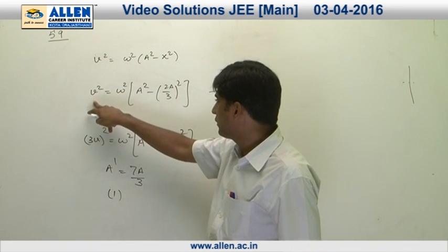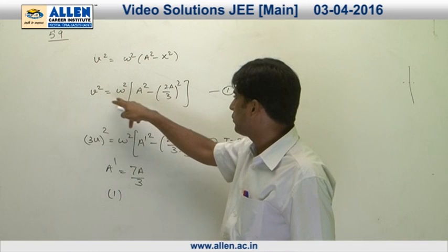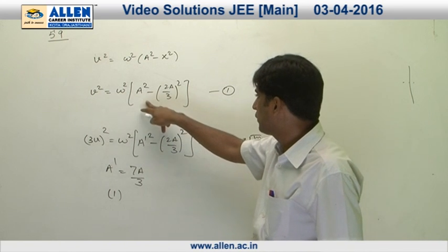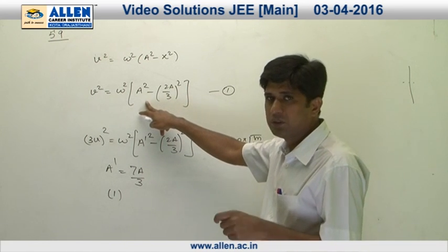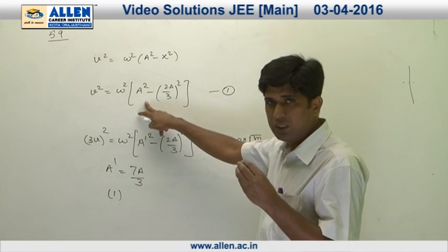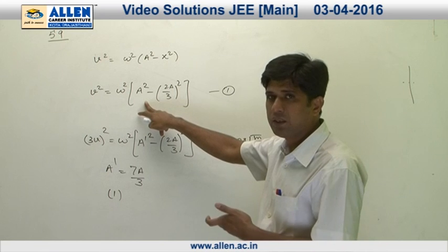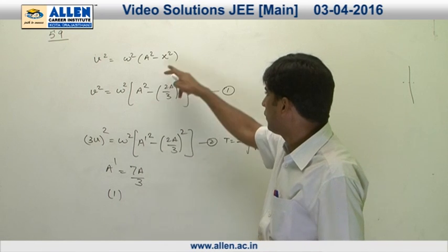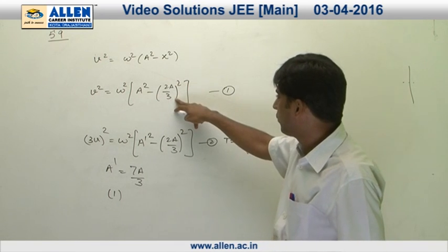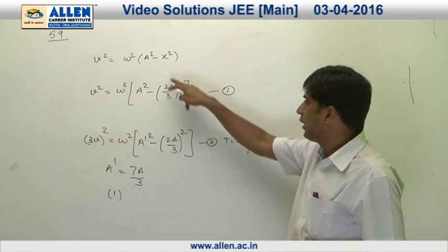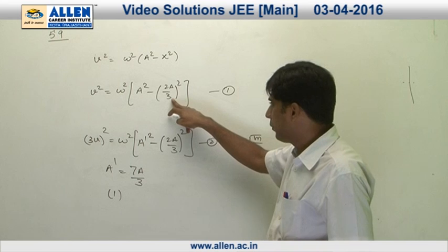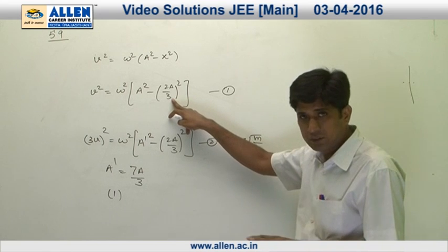In the first case, v² = ω²(a² - x²), because the displacement — that means the location of the particle — is 2a/3 from the mean position. Therefore, we can write x = 2a/3 in the first case.